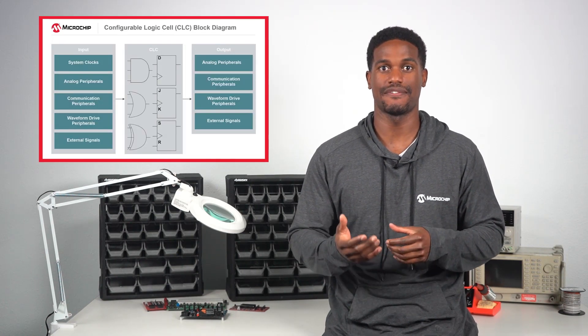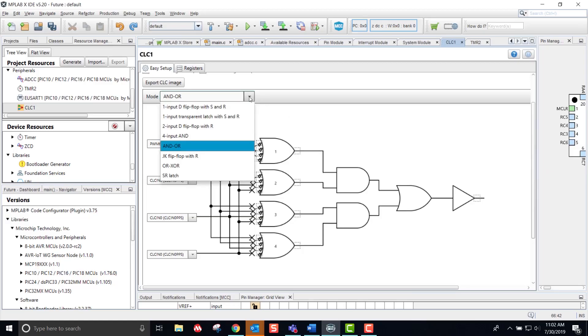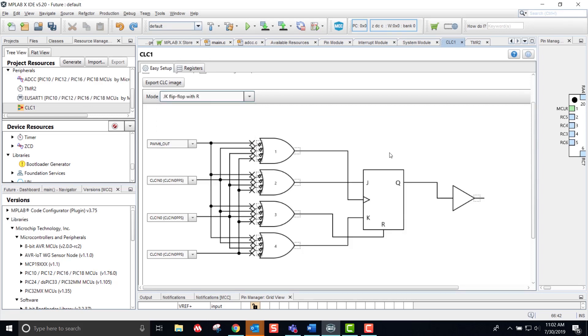Similar to the configurable custom logic peripheral on AVR devices, the configurable logic cell or CLC for short exists on PIC microcontrollers as well. With this peripheral, you are able to add combinational and sequential logic just by selecting from this drop down menu. You can also configure the inputs of the CLC to come from the outputs of other peripherals as well.